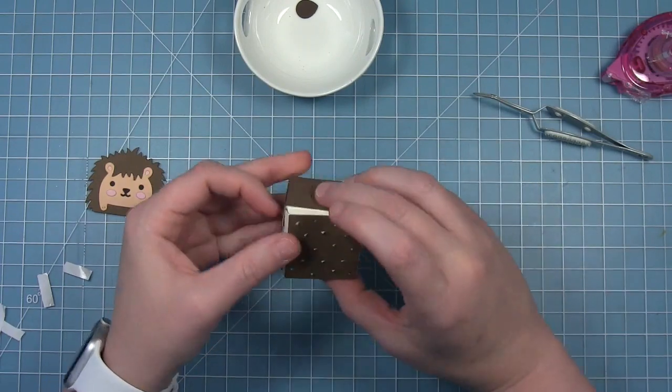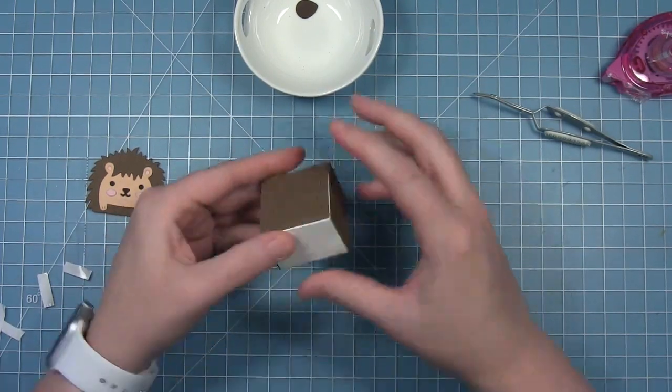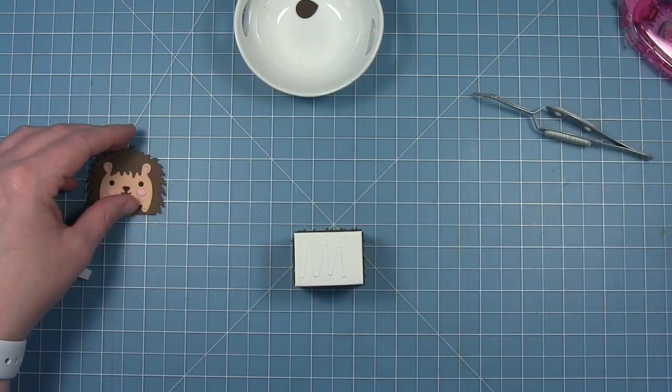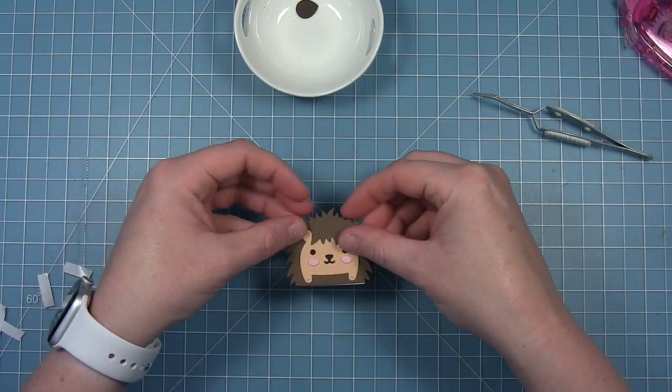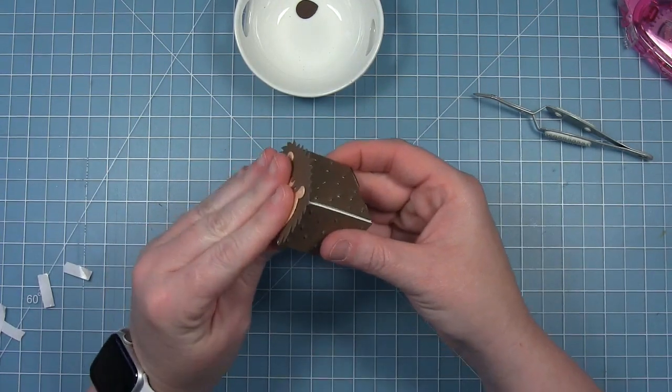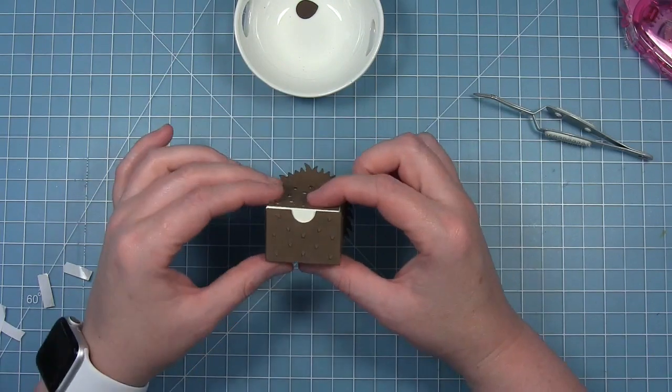I've got that one side that's still the color of the box and that's where my face is going to go. I'm just going to add a bit of glue to that. For this little hedgehog, the bottom part of him is nice and flat so that he's going to sit nicely on your tabletop once you get that face attached.